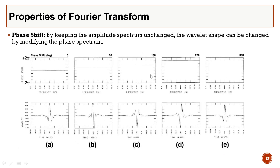The phase shift property: if you apply a constant phase shift to a zero-phase waveform for all frequencies, you change the shape of the waveform. Applying further higher phase shifts changes the shape progressively. By applying a constant phase shift you can change the shape of your wavelet, but the amplitude spectrum remains unchanged.